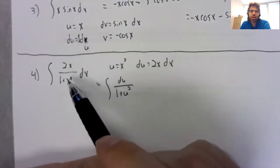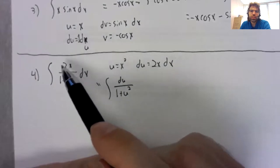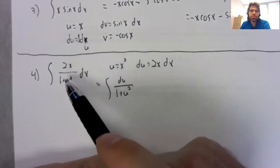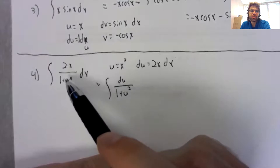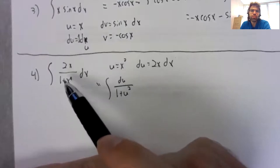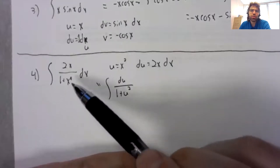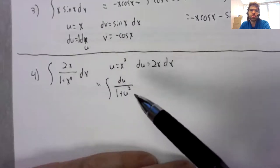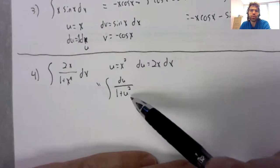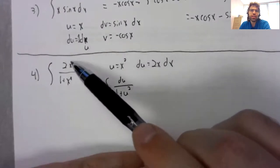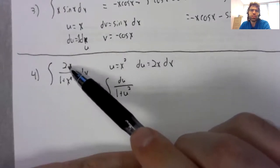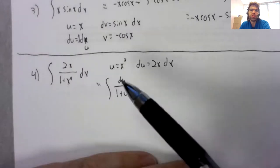but to be the arctangent, we wouldn't have this 2x, we wouldn't have this x to the 4th. So letting u be x squared will let us turn this x to the 4th into u squared, while simultaneously getting rid of this 2x by turning it into du.